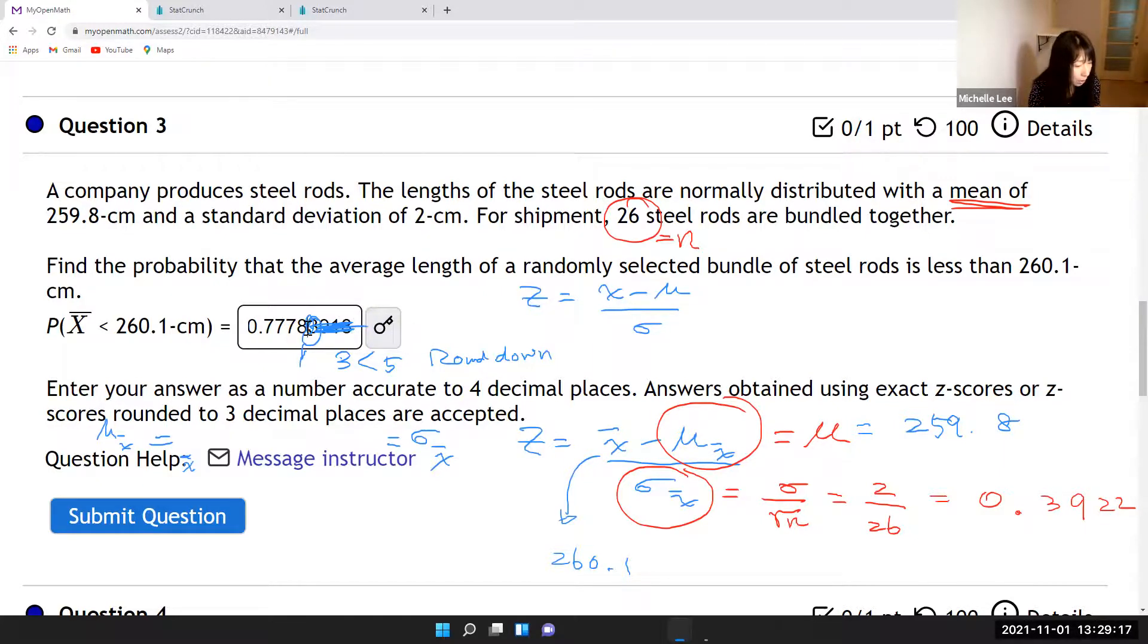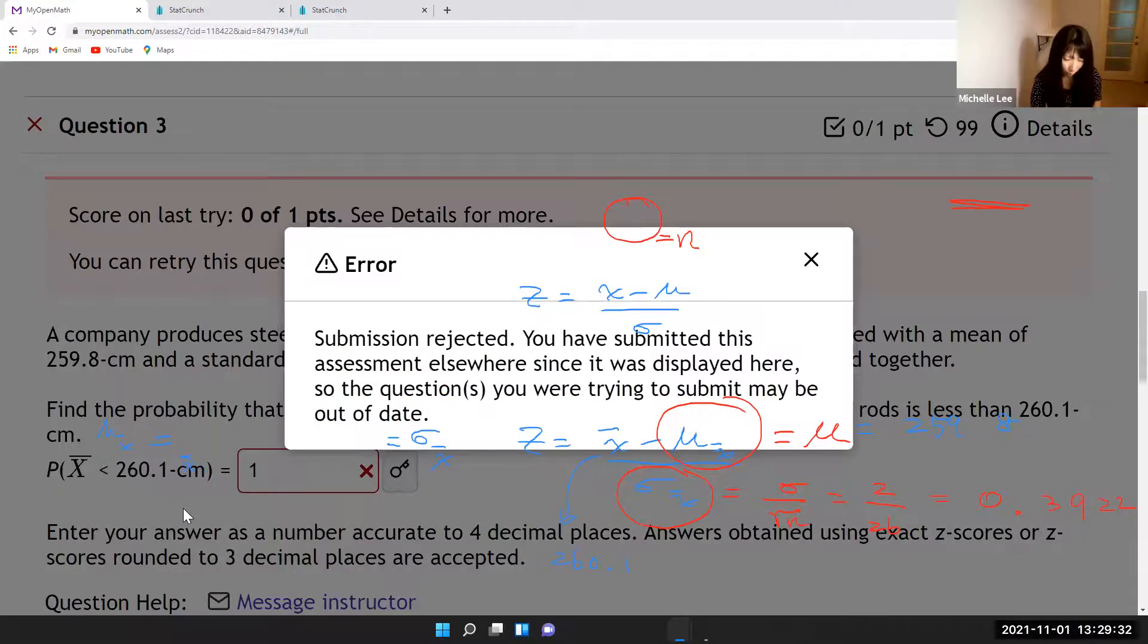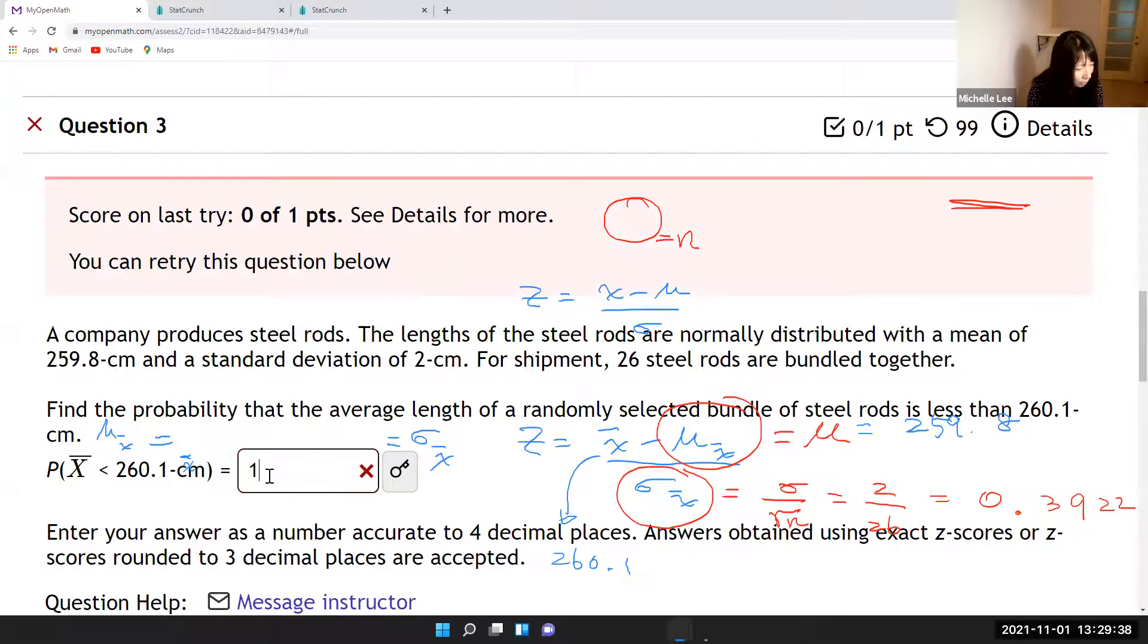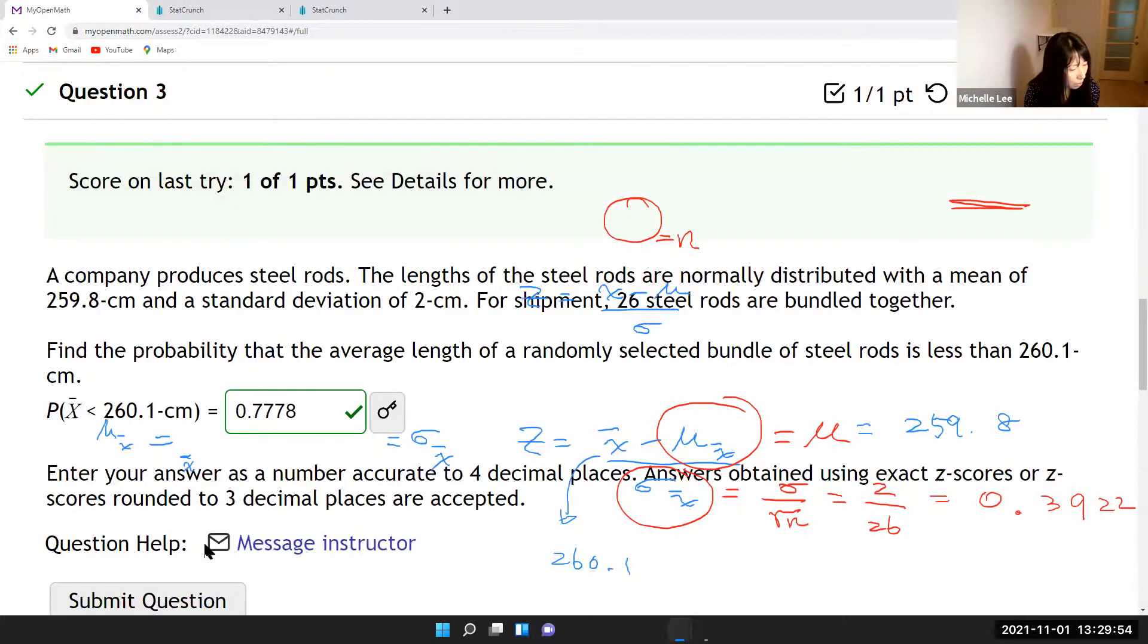So let's see whether this answer is accepted or not. Let's submit. Hold on one second. What was it? 0.7778, was it right? Okay, good. So I hope this one helps you. Thank you. Bye-bye.